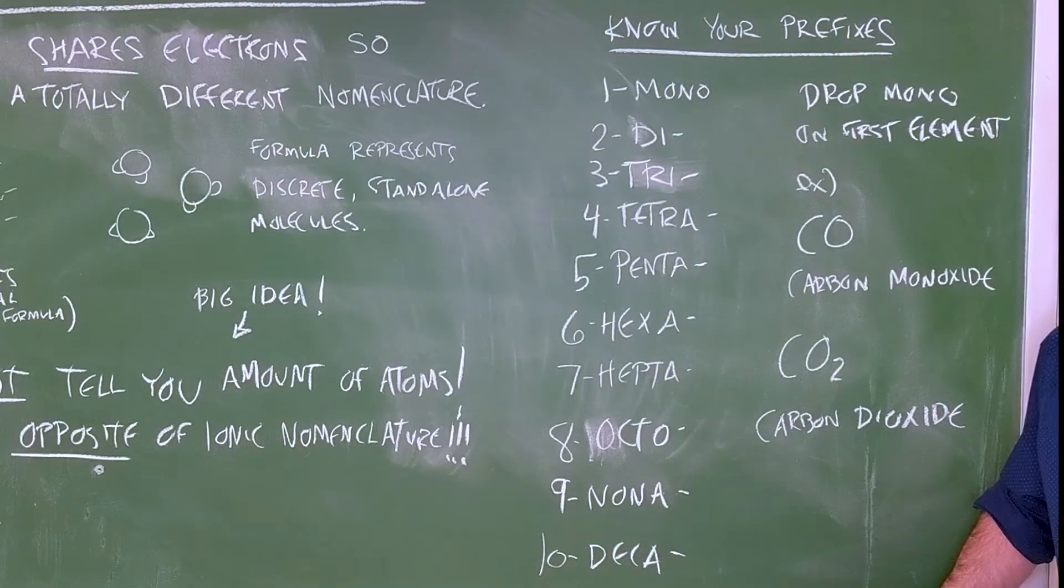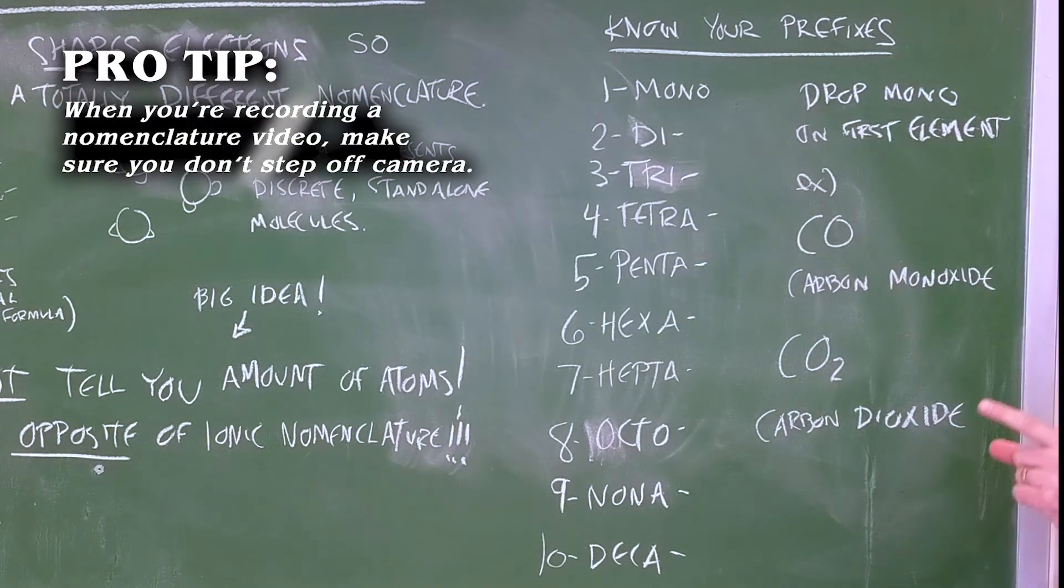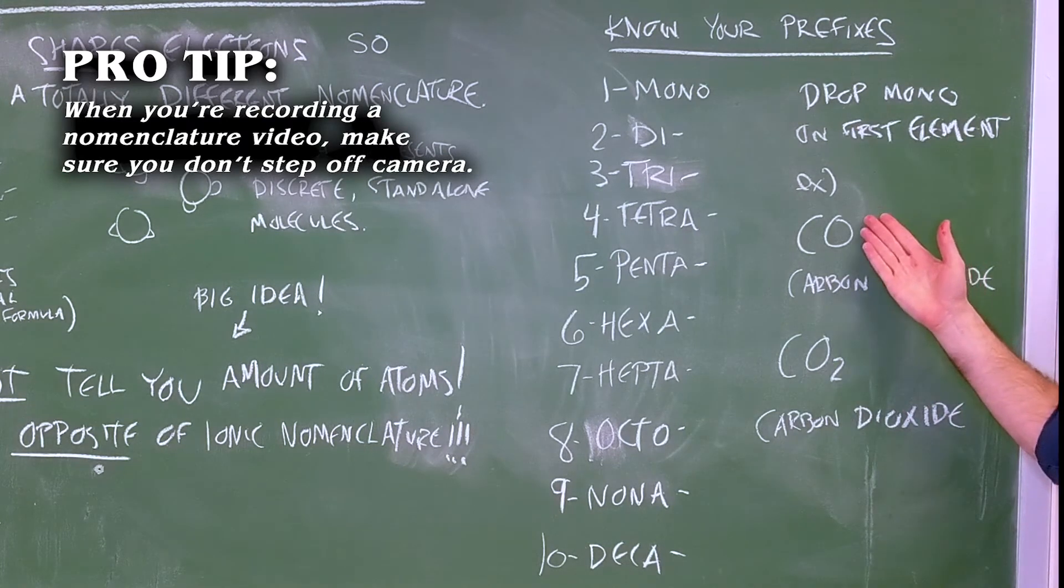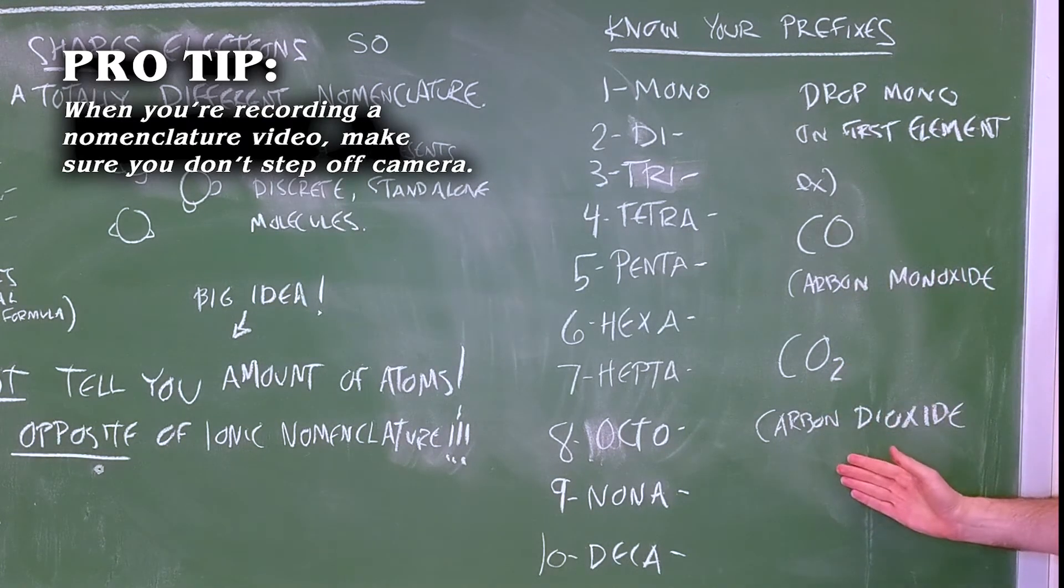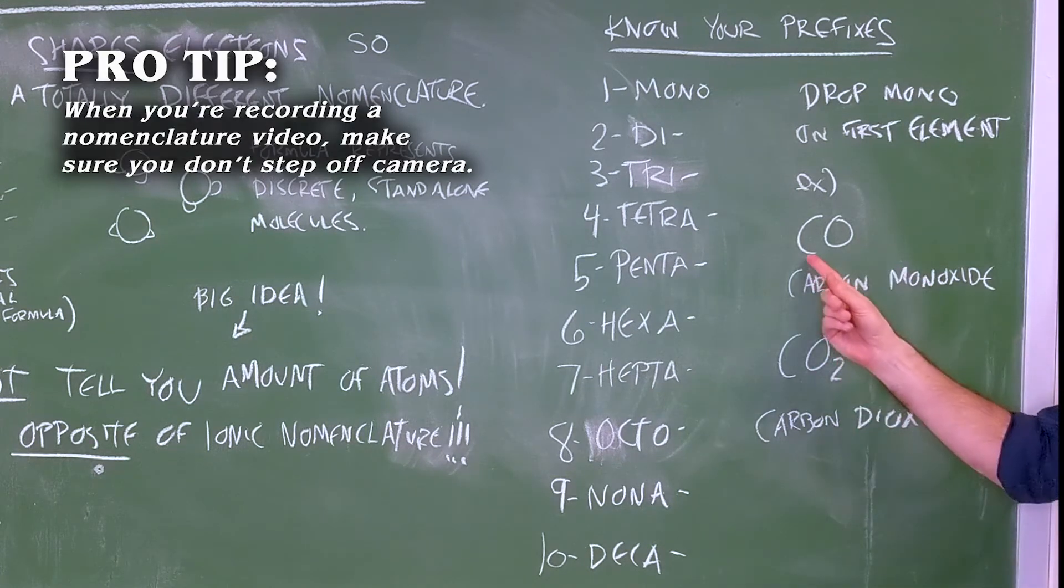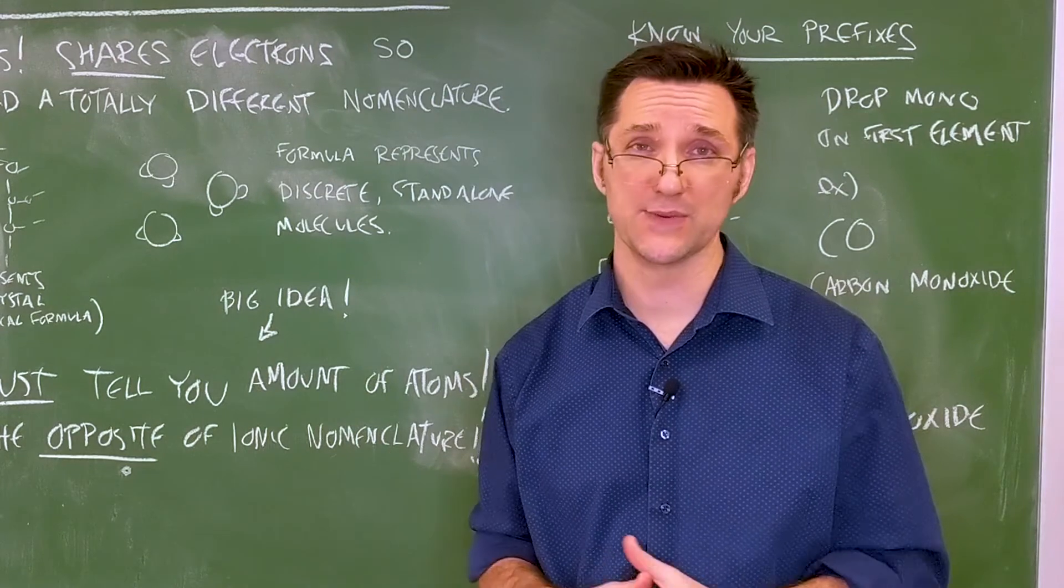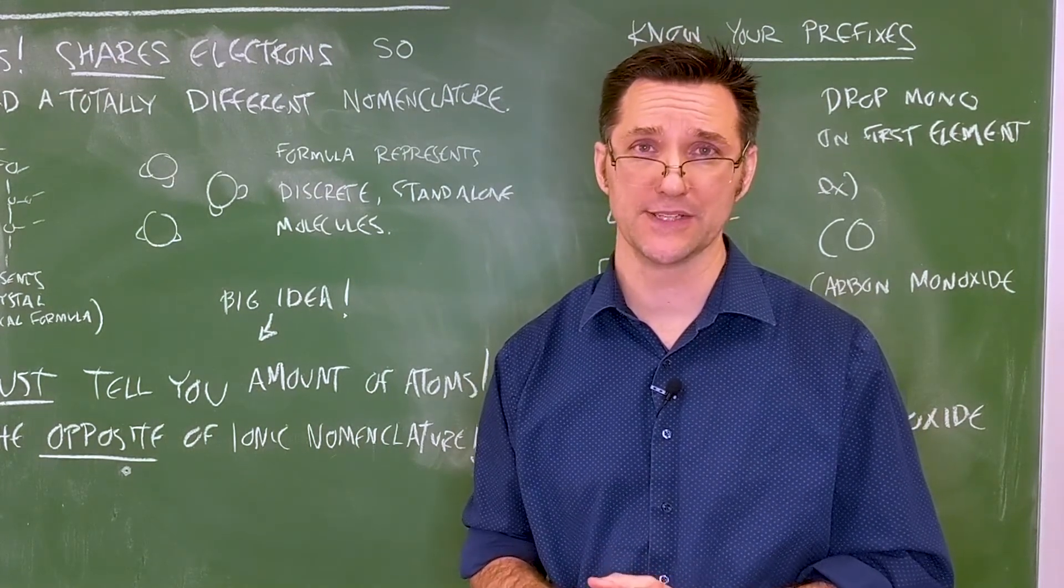So to do molecular compounds correctly, you just have to know your prefixes. There's only one slight wrinkle in molecular nomenclature, and that is if we only have one of the first one, we drop mono. An easy way to remember this is think of carbon monoxide versus carbon dioxide. And that's it. That's a pretty concise review of everything I know about nomenclature.